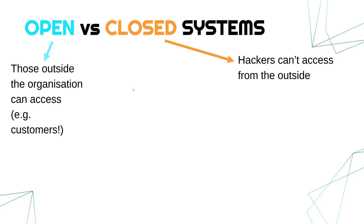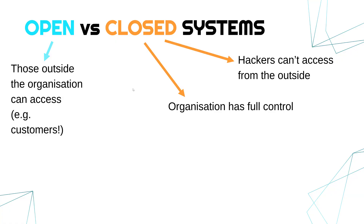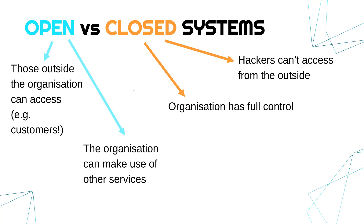If it's closed, a hacker can't access it from the outside. You can still have internal threats, but external threats almost totally go away. Another benefit of a closed system is that it's within the complete control of the organisation — they can decide exactly what is going to be in that system. Whereas with an open system, there might be a benefit in that you are able to make use of other services.